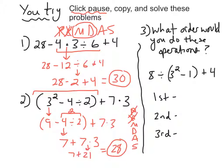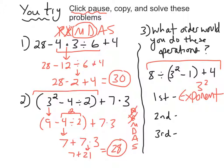Last question. It asks: what order would you do these operations? Looking at the problem, my first step would be the exponent. Parentheses might seem like a good answer, but you don't do parentheses — it's not an operation. So the first operation is the exponent: 3 squared. My second operation would be subtract, because after evaluating the exponent I'd still have 9 minus 1 inside the parentheses. Then after subtracting I'd have 8 divided by 8 plus 4. My third operation would be divide, and my final operation would be add.